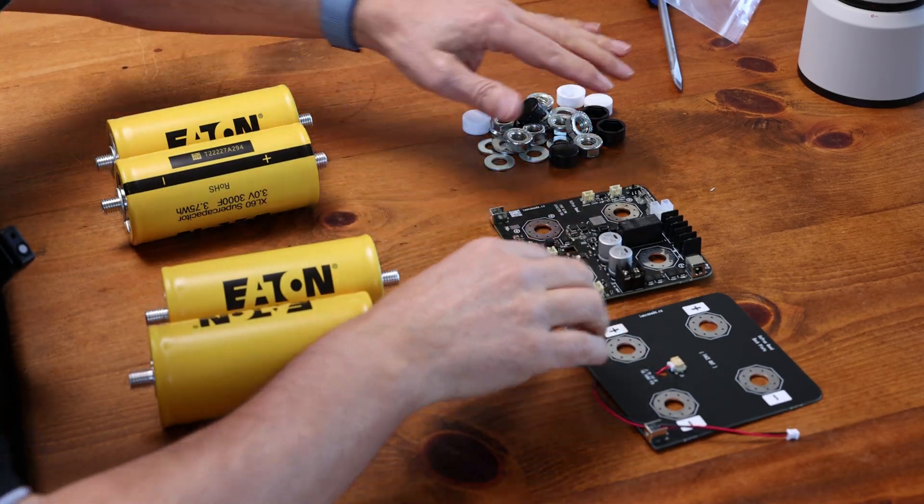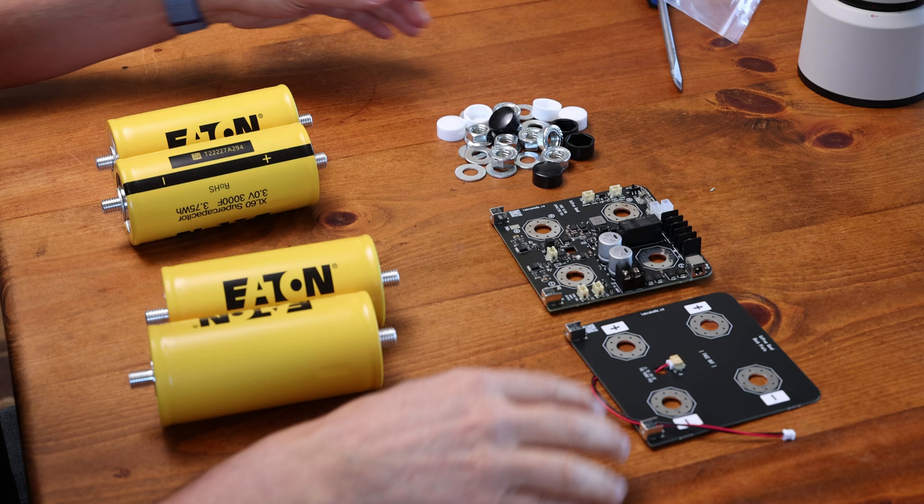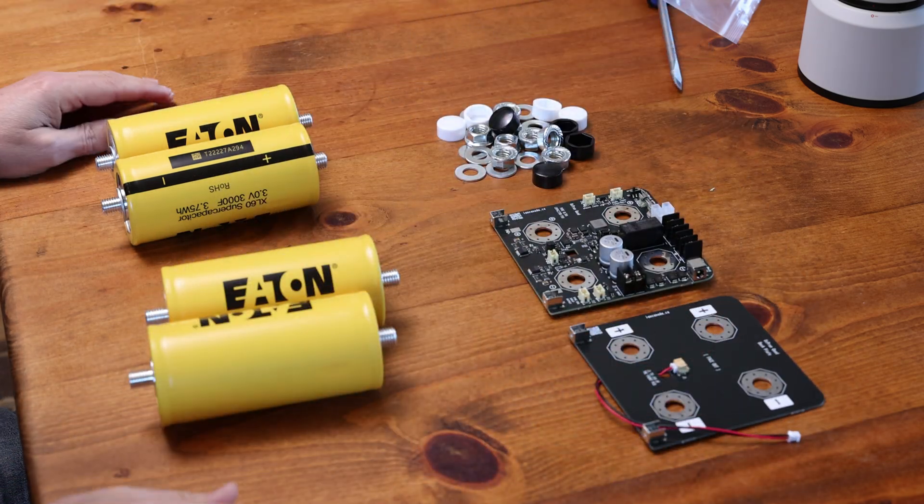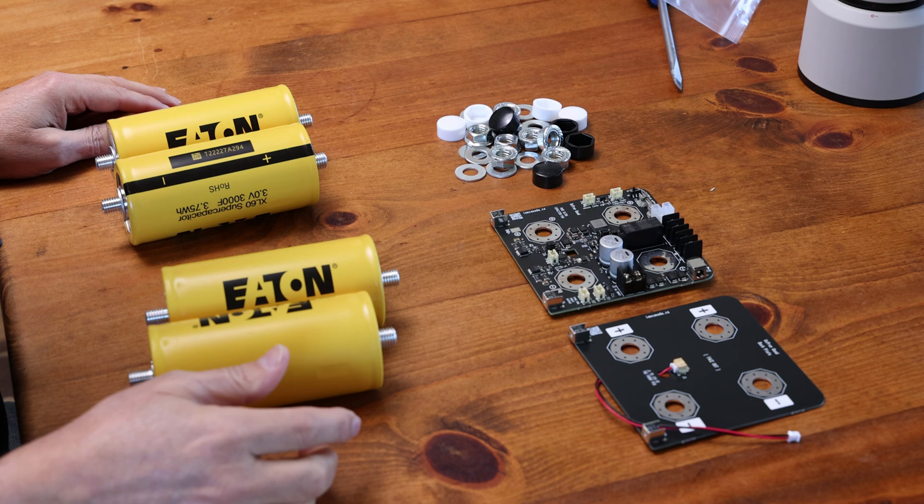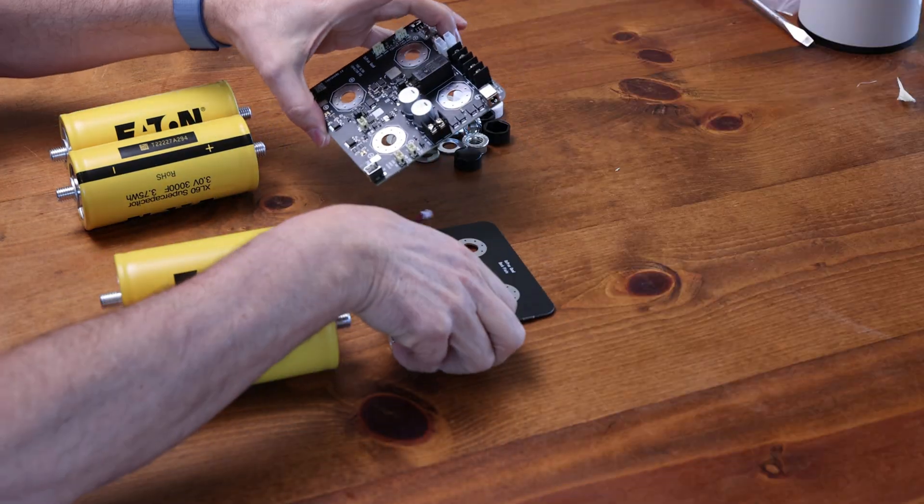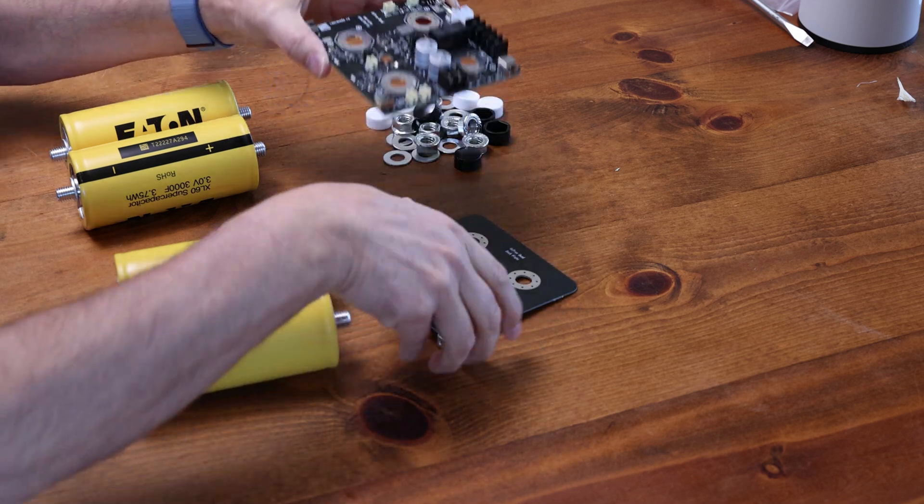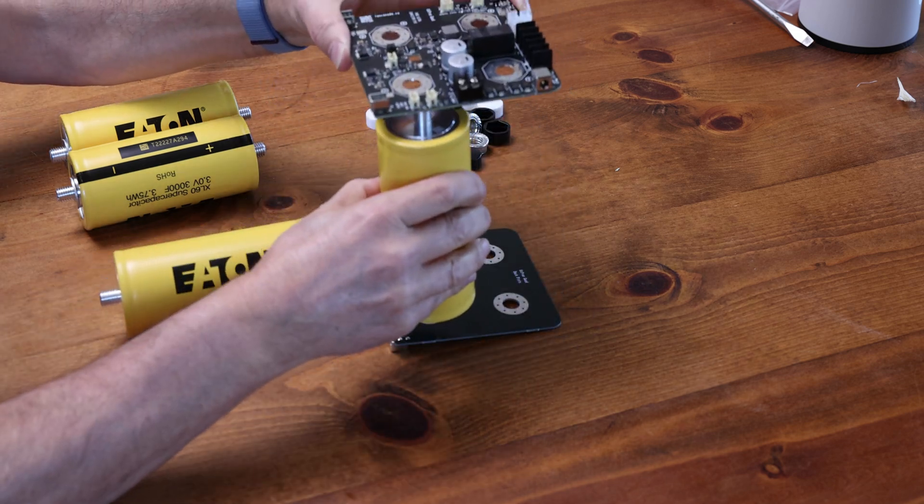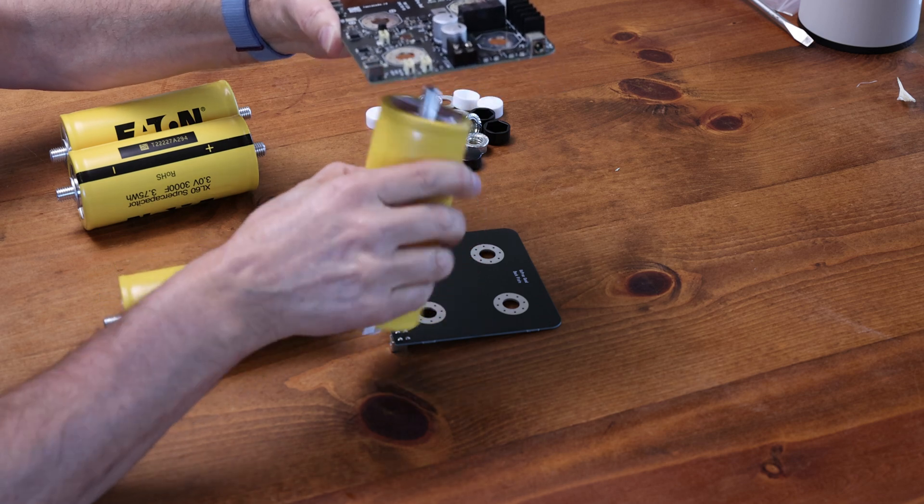So here it is. We're going to do a little quick assembly. So these are the parts that come with it. So this is all self-contained. You don't need to basically use any zip ties or anything. It's all self-contained. That's what I like about it. So we have the top board here and the bottom board here and the ultra capacitors are going to go in between. I'm going to do a very quick assembly here.